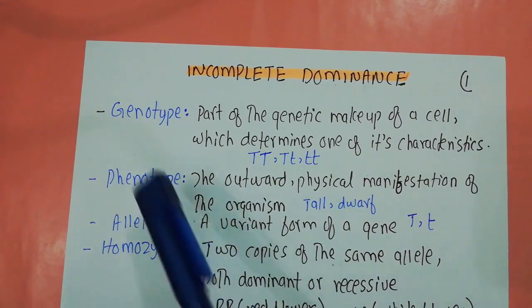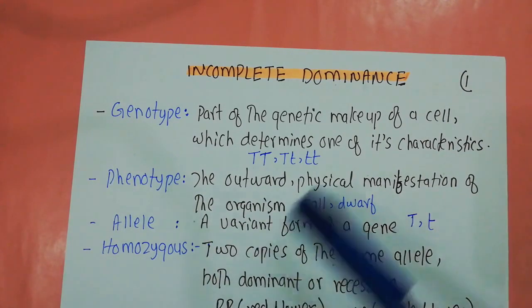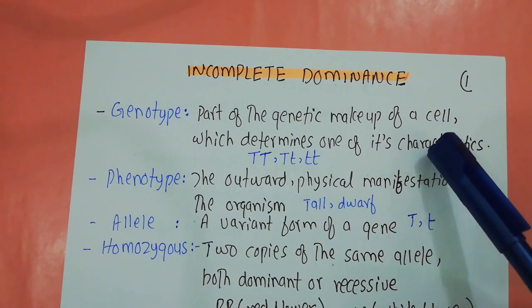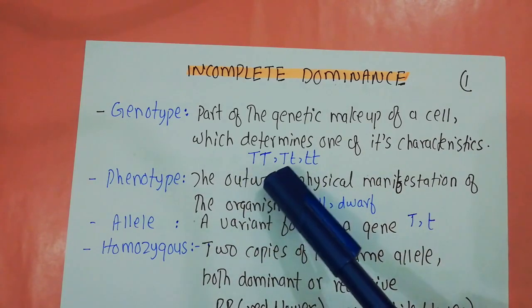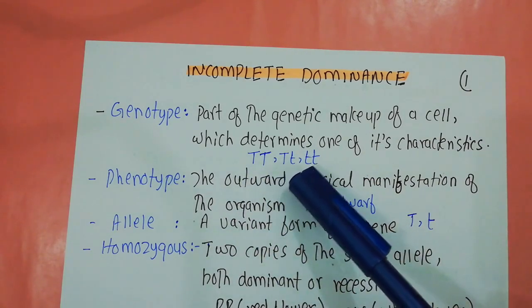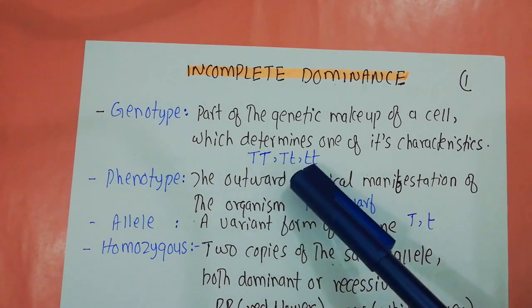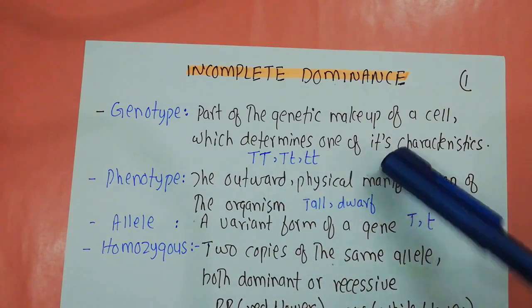One important term is the genotype. A genotype is part of the genetic makeup of a cell which determines one of its characteristics — for example, the height of the pea plant. So the genotype can be capital T capital T, capital T small t, or small t small t. These are the genotypes which represent the height of the plant, which is one of the characteristics of the pea plant.